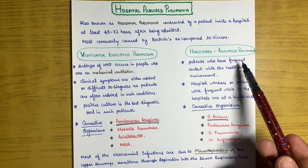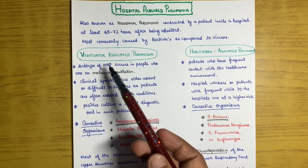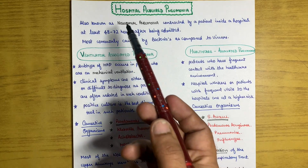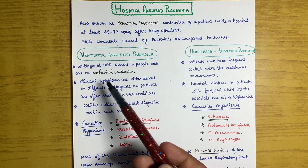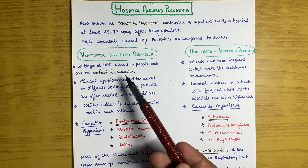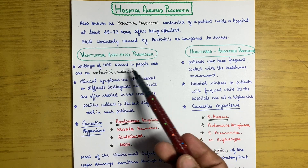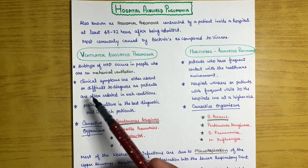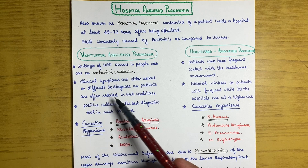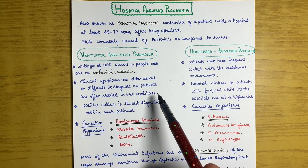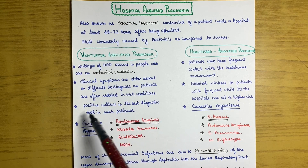Ventilator-associated pneumonia is a subtype of HAP — hospital-acquired pneumonia — and occurs in people who are on mechanical ventilation. Clinical symptoms are either absent or difficult to diagnose, as these patients are often sedated, being already on mechanical ventilation.